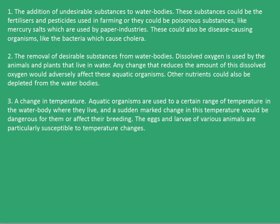Moving forward, let's see the three types of water pollution. The first one is the addition of undesirable substances to water bodies. These substances could be fertilizers and pesticides used in farming, or they could be poisonous substances like mercury salts which are used by paper industries. This could also include disease-causing organisms like the bacteria which causes cholera.